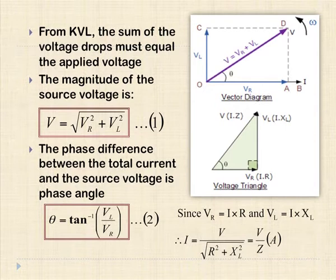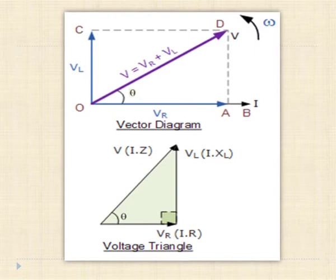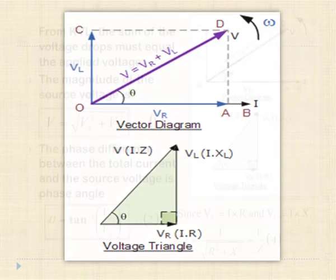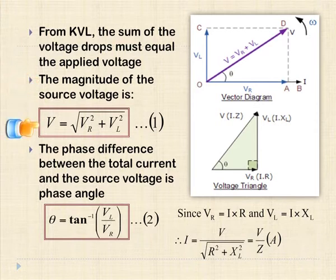Here we will take the current as a reference vector since the current is the same in both components. We can see in the figure the OB line represents the current reference line. Line OA is the voltage of the resistive component, which is in phase with the current. Line OC shows the inductive voltage, which is 90 degrees leading the current. The line OD gives us the resultant or supply voltage. The voltage triangle is derived from this diagram whose sides are given by Vr, Vl, and the hypotenuse OD representing the resultant voltage. Using the Pythagorean theorem, the magnitude of the source voltage is V = √(Vr² + Vl²).